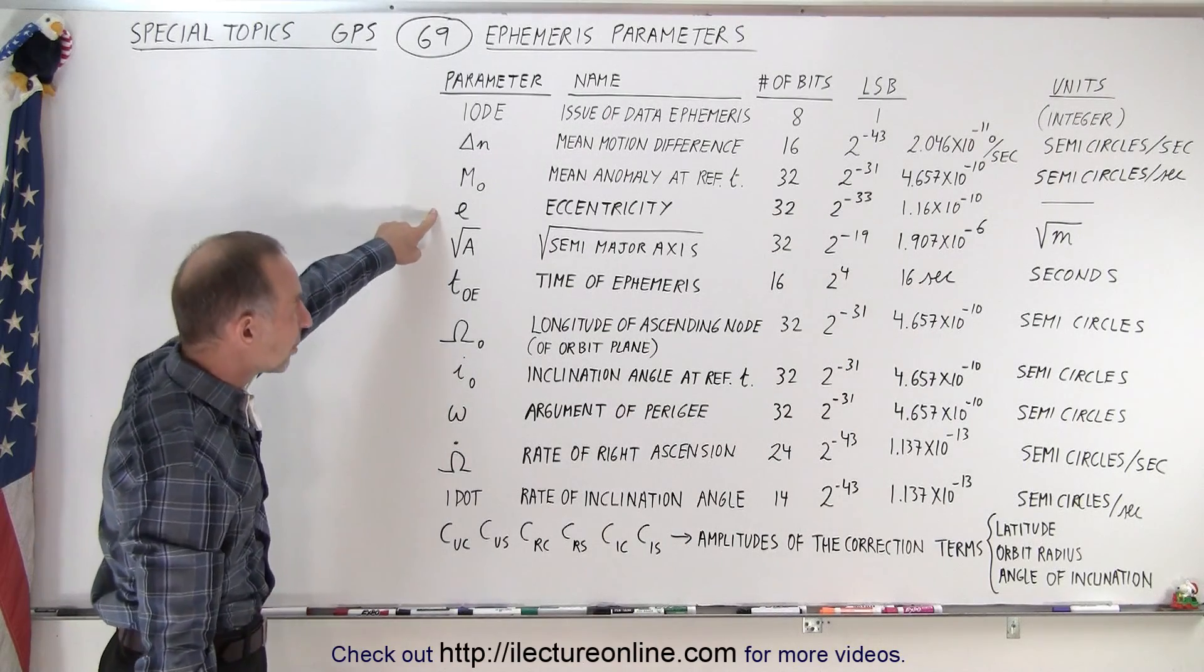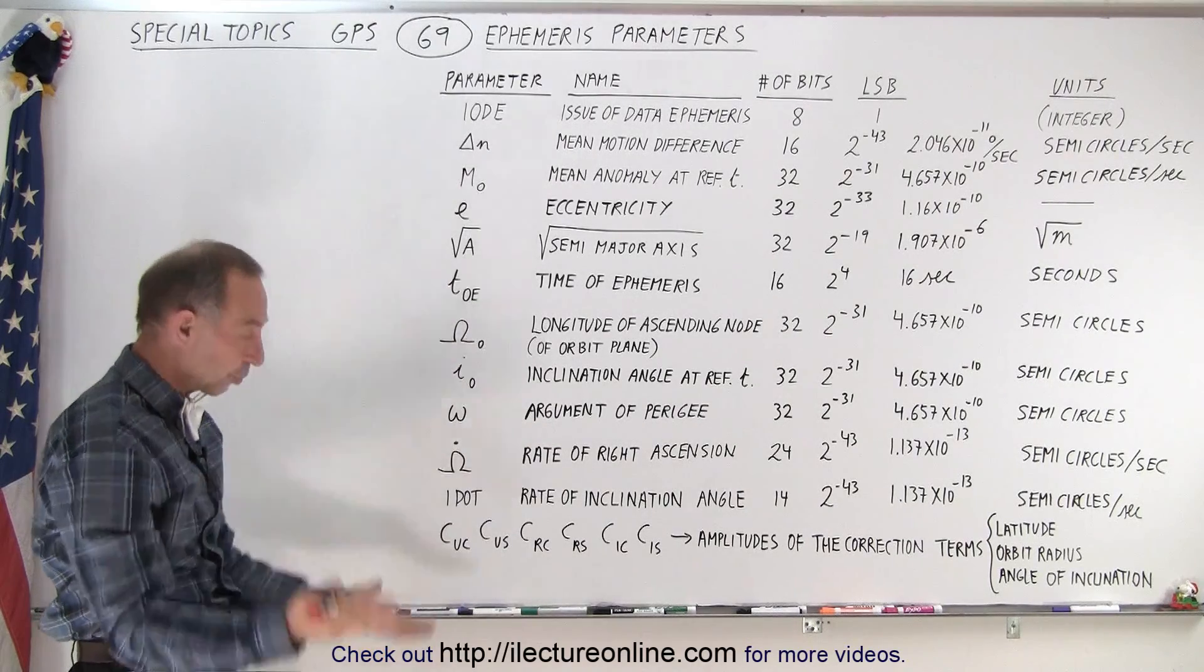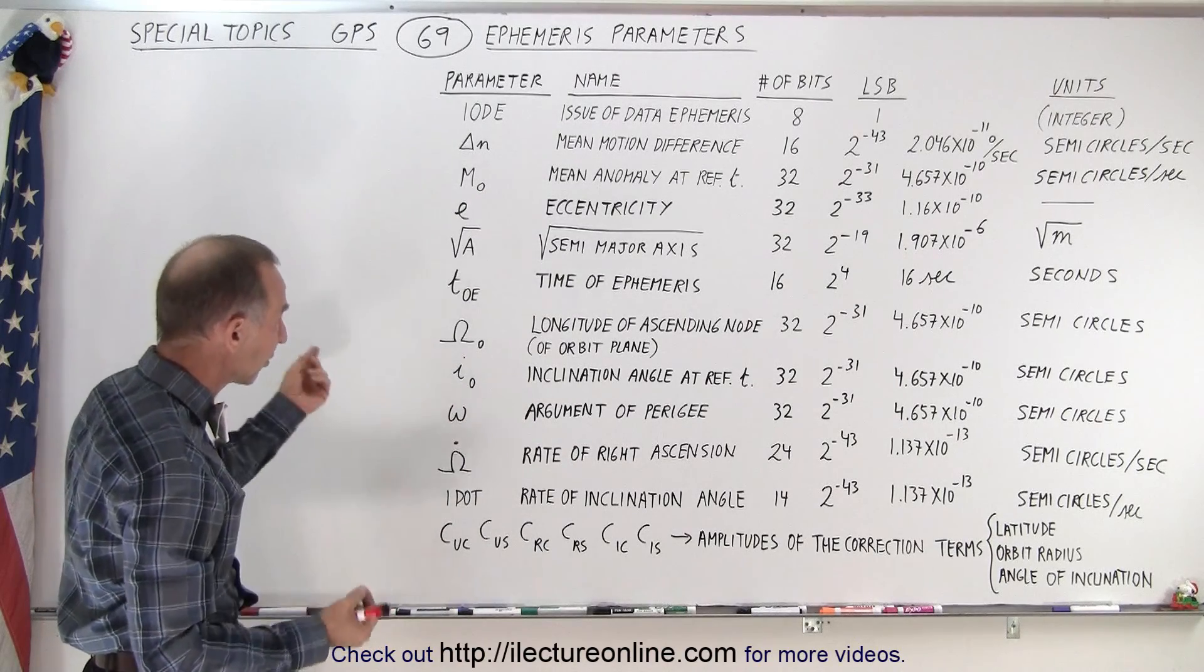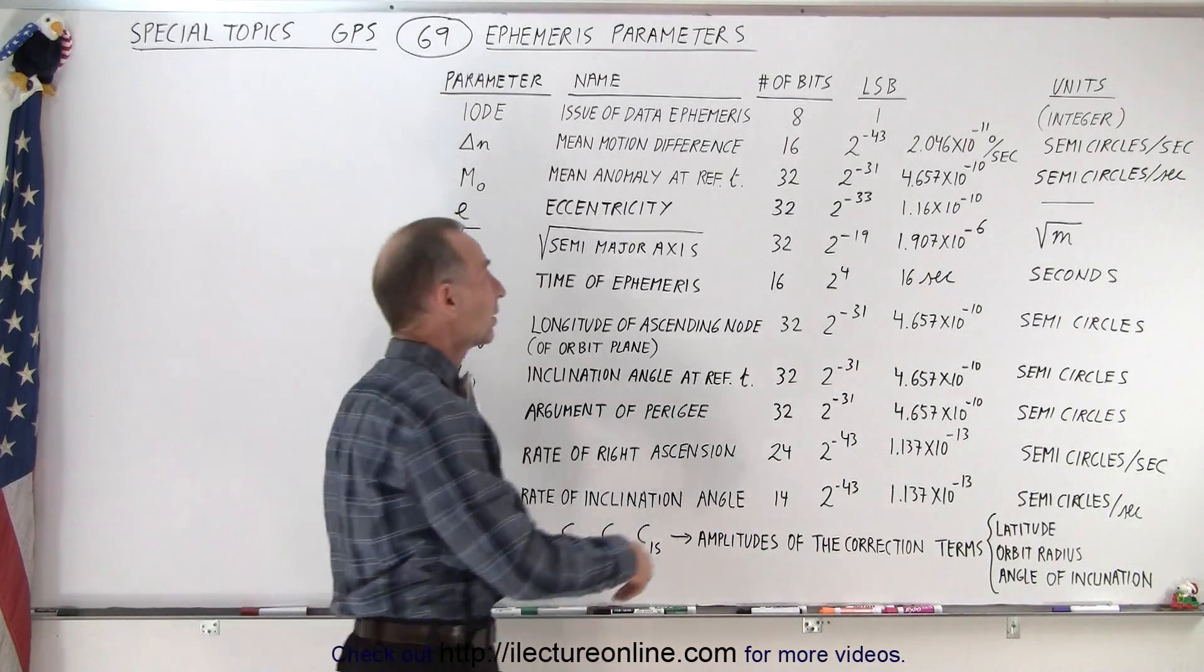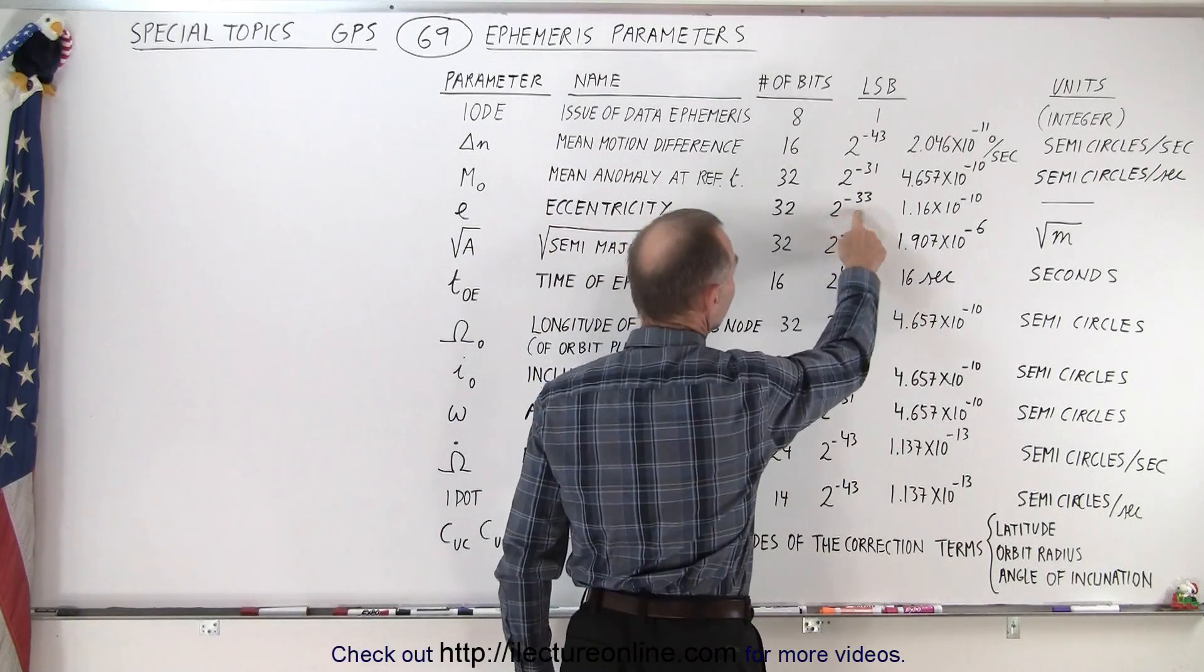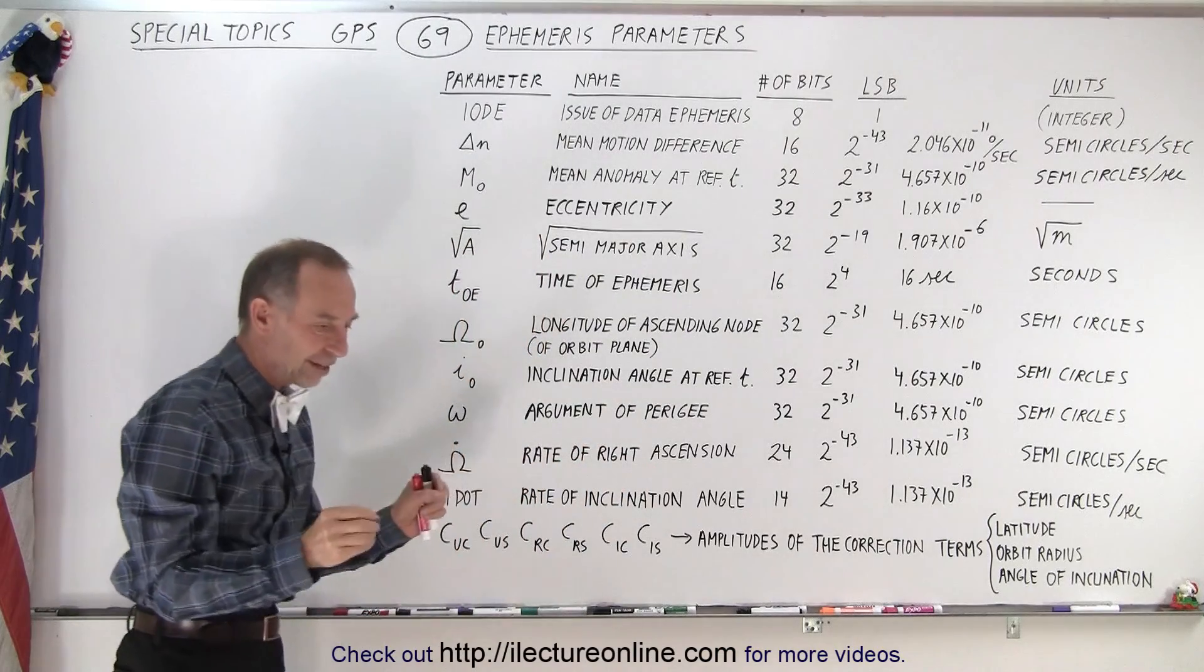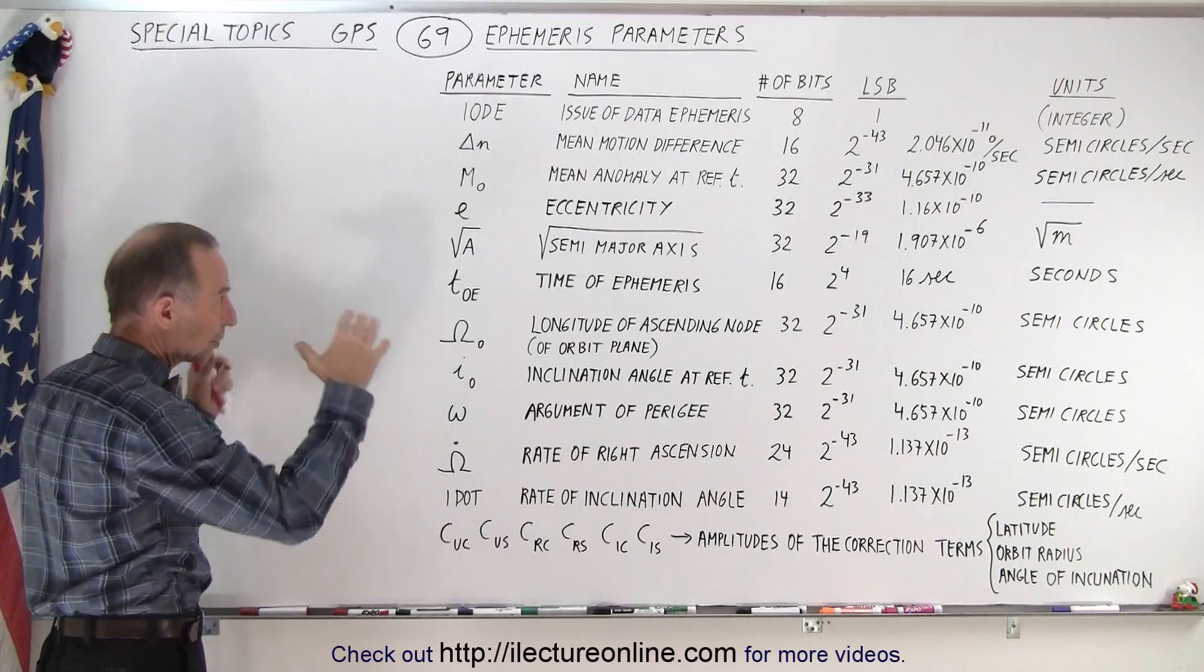The next one is the eccentricity. That's the difference between being a perfectly circular orbit and an elliptical orbit. The greater the eccentricity the more it's elliptical rather than circular. Notice that the LSB is 2 to the minus 33 which is a very tiny number.